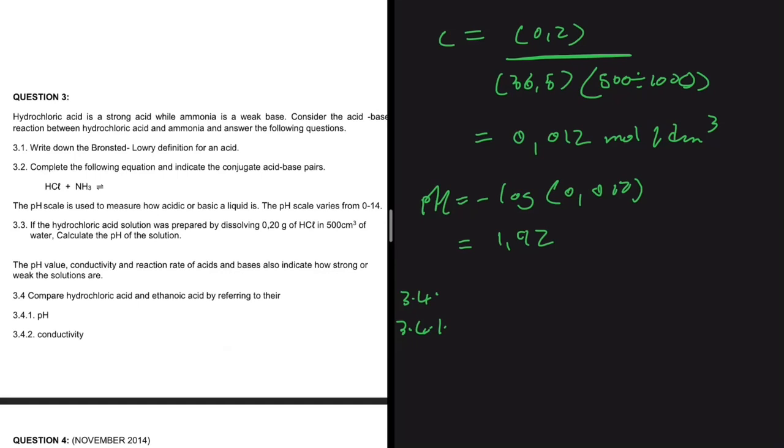So HCl, it is a strong acid, is a strong acid. And then on the other side, ethanoic acid, we have ethanoic acid. It is a weak acid.